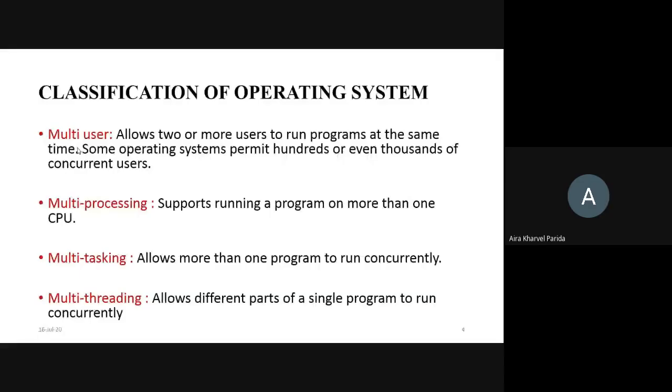Classification of operating system. Basically we classify the operating system into broadly four categories: multi-user, multi-processing, multi-tasking, and multi-thread. Multi-user means it allows two or more users to run a program at the same time.